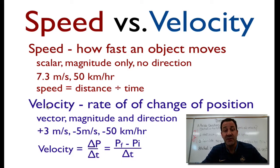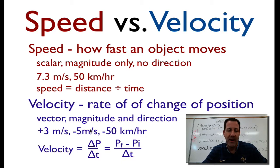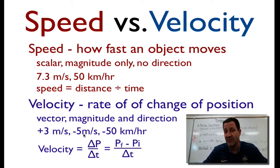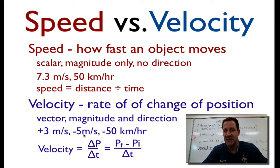Velocity is a rate of change of position. Velocity is a vector, which means you have to use the magnitude and the direction — a number and a direction: east, west, north, south, positive, negative. Here are some examples: plus 3 meters per second tells us the object is going 3 meters per second in the positive direction. Minus 5 meters per second means the object has a speed of 5 meters per second but is going in the negative direction — so we know its speed and its direction, therefore we know its velocity.